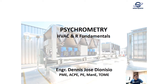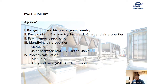Here is our agenda. First, I will give you some background and history of psychrometrics — how it originated and how you can construct your own psychrometric chart. Then we will review the basics of the psychrometric chart and air properties, followed by a review of the processes of air that can be represented on the psychrometric chart.